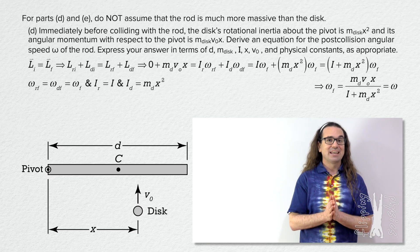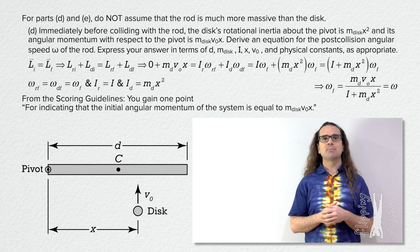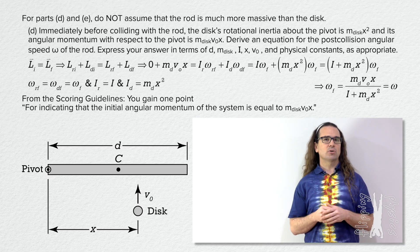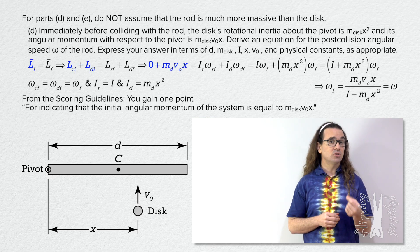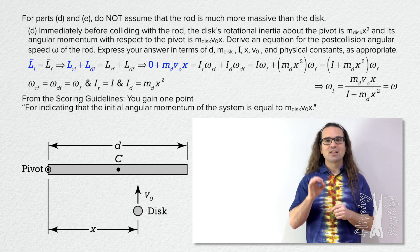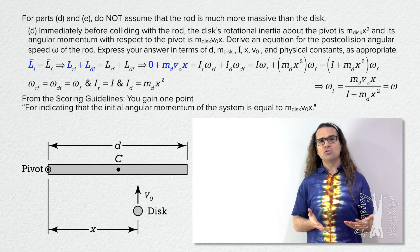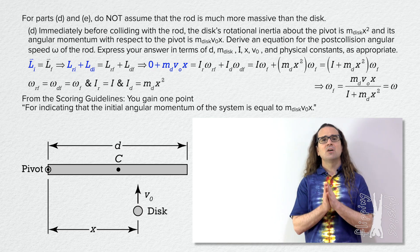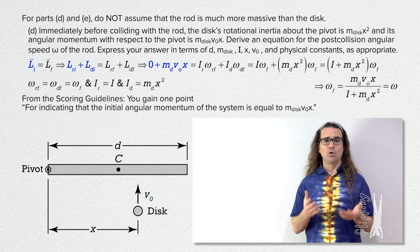A quick point about grading. From the scoring guidelines: you gain one point for indicating that the initial angular momentum of the system is equal to the mass of the disc times v-naught times x. You can get one point for simply identifying that the initial angular momentum of the rod is zero and therefore the initial angular momentum of the system is the angular momentum of the disc only. That is essentially the very first step in solving the problem, and even if you did not know how to solve this problem, that is something you should be able to identify. So please always write something down that you think is probably correct, even if you do not know how to solve the whole problem.